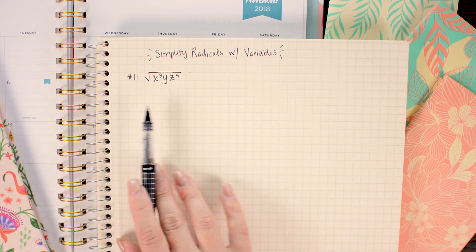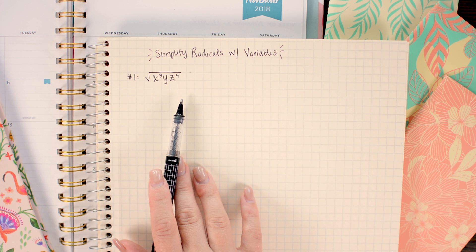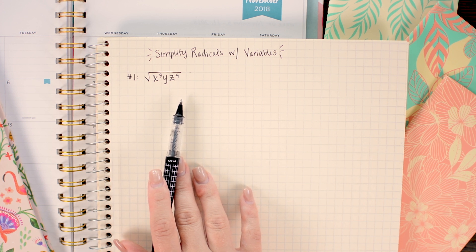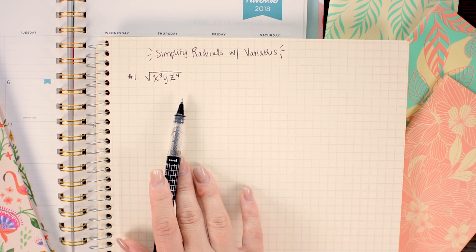Now today I'm going to show you two separate techniques for simplifying radicals with variables. You could choose either technique. I'm going to show both of them to you so that way you can decide for yourself which you like better. The first technique is going to have to do with radical notation and the second technique is going to have to do with fractional notation.